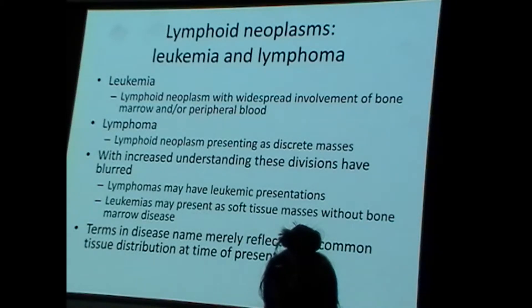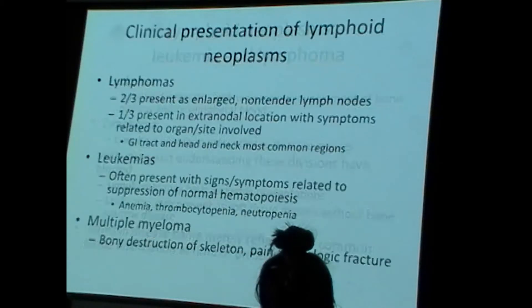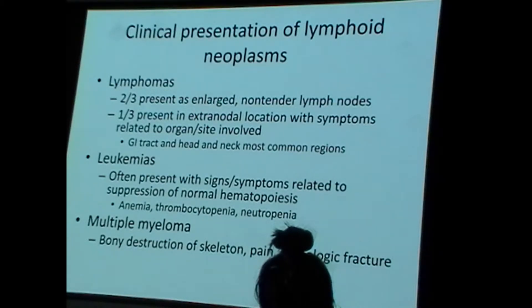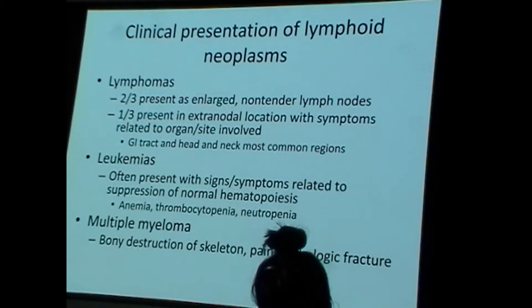If we call a disease by a particular name like Hodgkin lymphoma, that says something about how the disease usually presents. Leukemias will affect hematopoiesis adversely, so there can be symptoms related to anemia, thrombocytopenia, or leukopenia. Multiple myeloma, which is a type of cancer of plasma cells, affects the skeleton — multiple tumors affect the myeloid region scattered throughout the skeleton.